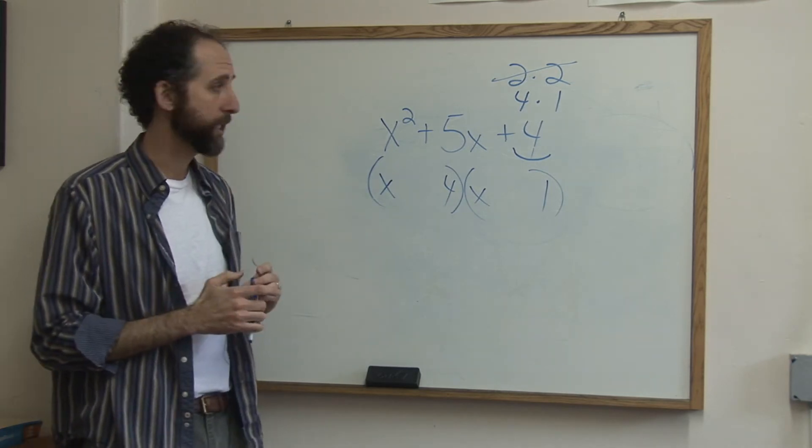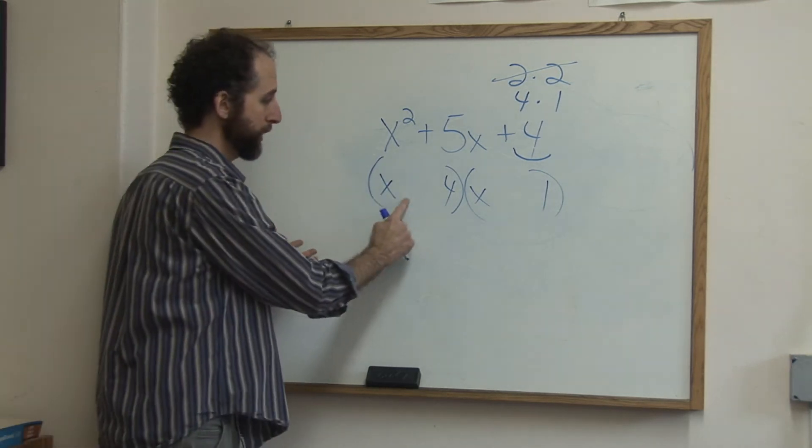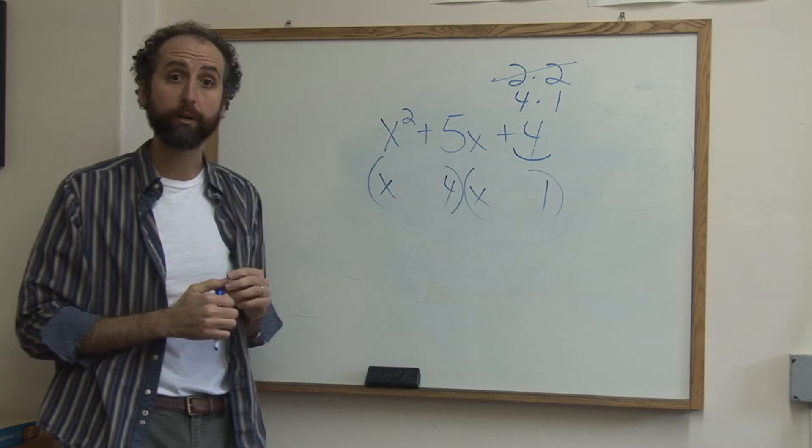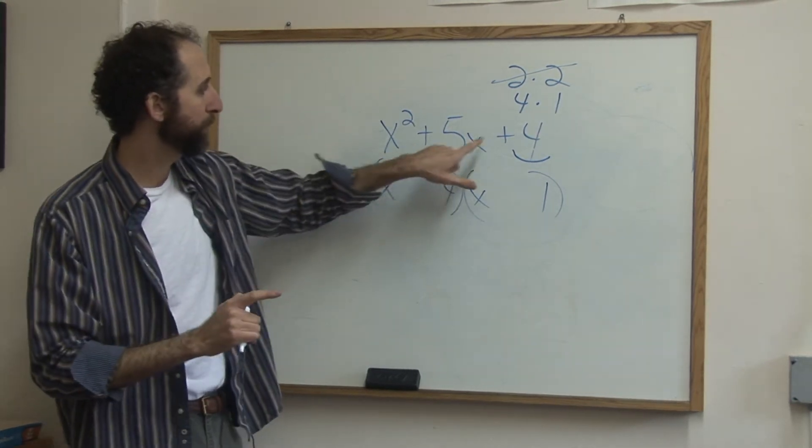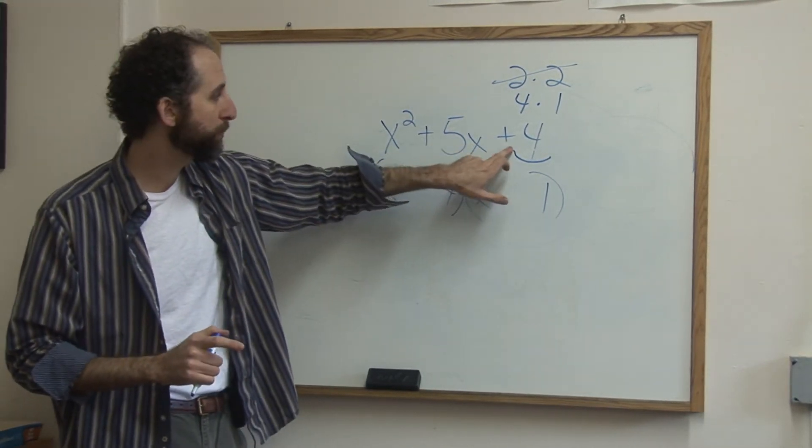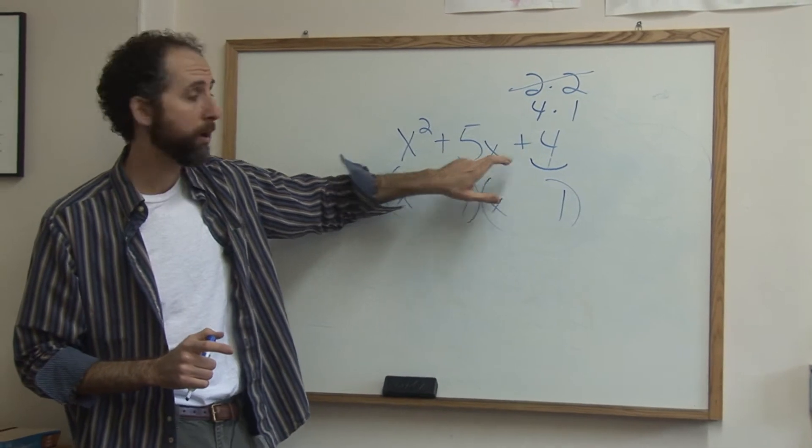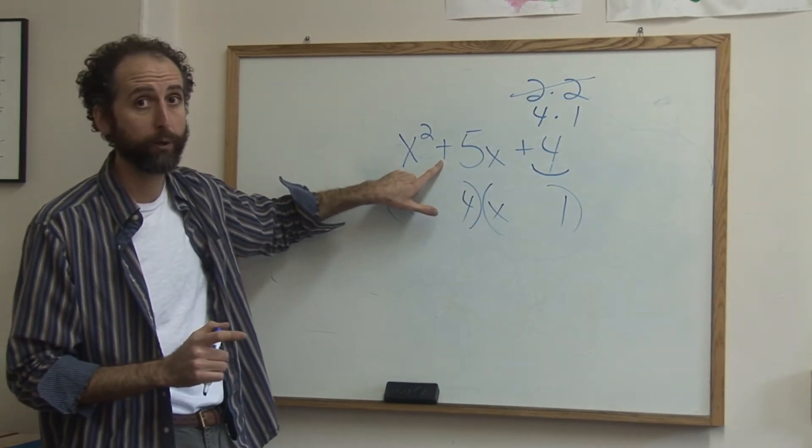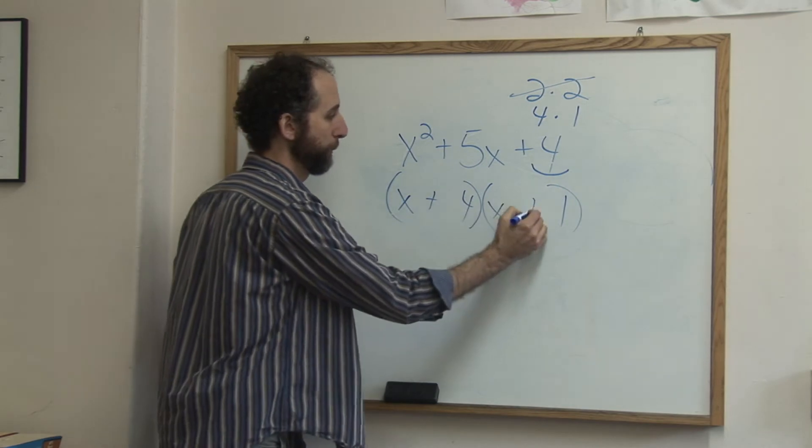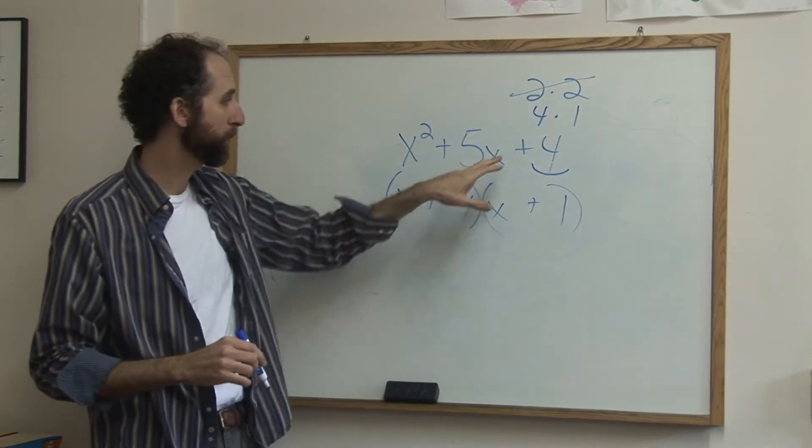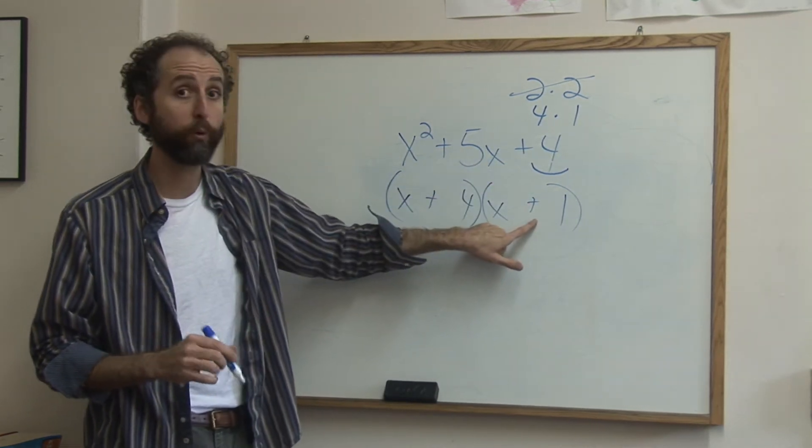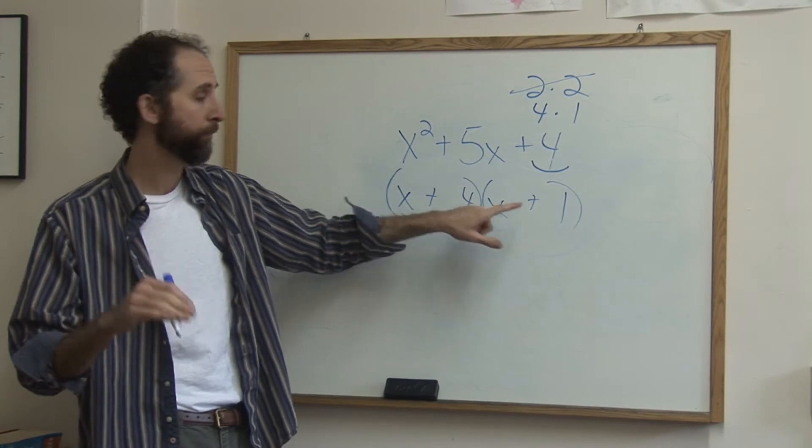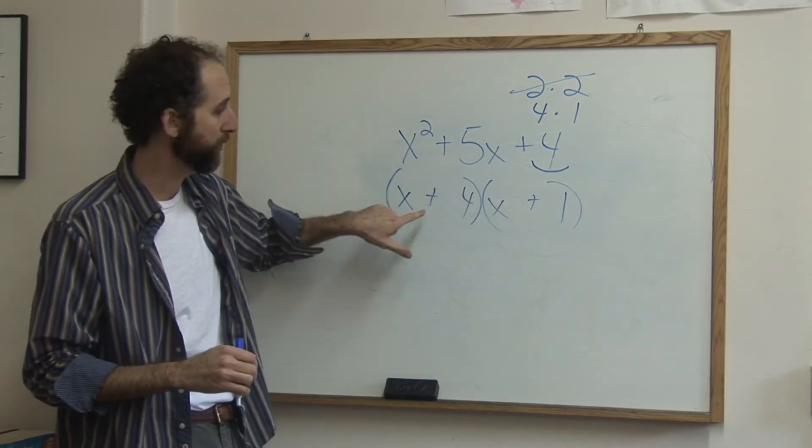Now you just have to decide about the signs. Is this positive and negative, or negative negative, or what? Because these are both positive, we want to multiply to get positive 4, but add or subtract to get positive 4 also, so they're both going to be positive. Because the only way to multiply to get a positive is for them to both be positive or both be negative. So we want to add to be positive, so they're both positive.